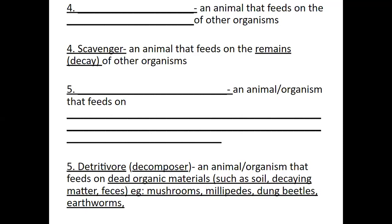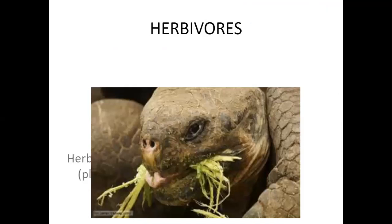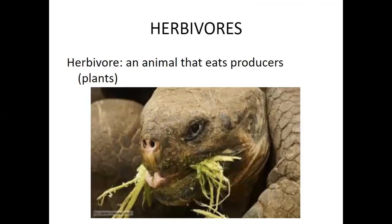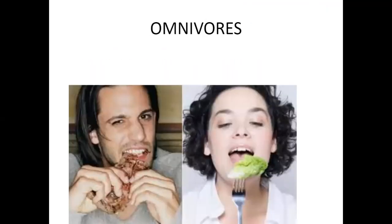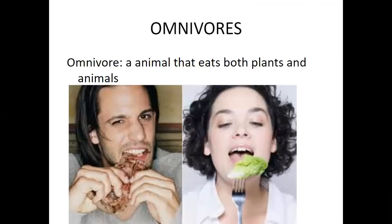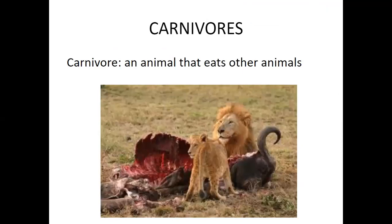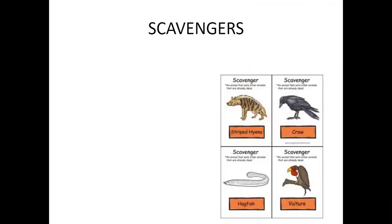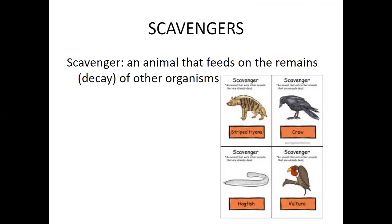To visualize the categories: a herbivore, then onto our omnivore — which is us. Carnivores as well. Some examples of scavengers include hyenas, crows, hogfish, and the vulture is the big one to remember.